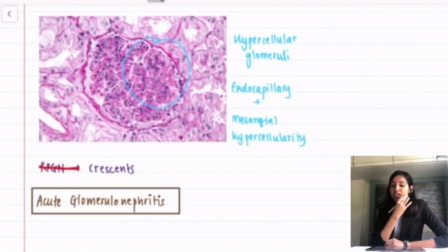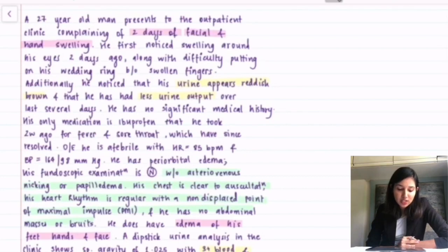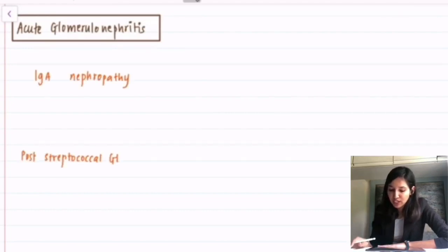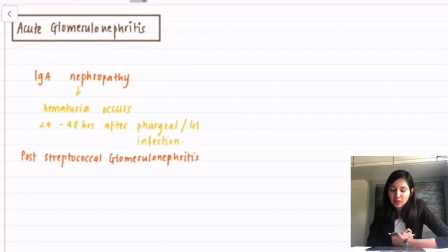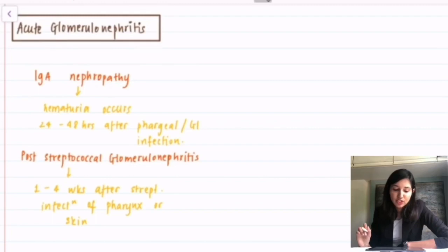Now, I would like to point out that in our case, there was a history of fever and sore throat two weeks ago that is a pharyngeal infection. That leaves us with two differentials, IgA nephropathy or Berger's syndrome and post-streptococcal glomerulonephritis. In IgA nephropathy, the hematuria occurs 24 to 48 hours after pharyngeal or GI infection. While in post-streptococcal glomerulonephritis, we have presentation of nephritis one to four weeks after streptococcal infection of pharynx or the skin. Our patient had the history of fever and sore throat two weeks ago which makes PSGN our most likely diagnosis.